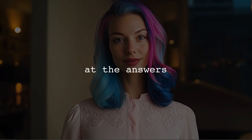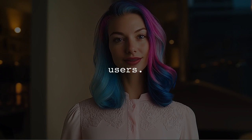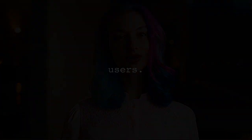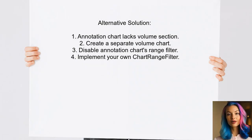Now let's look at the answers provided by other users. One user points out that the annotation chart does not support a volume section directly. However, they suggest a workaround by creating a separate chart for the volume.